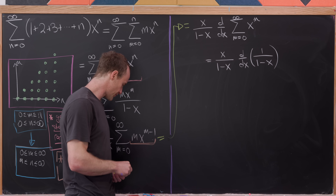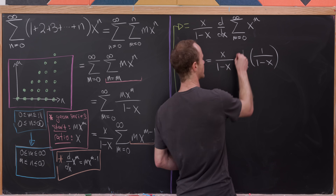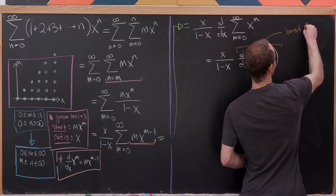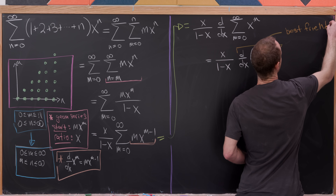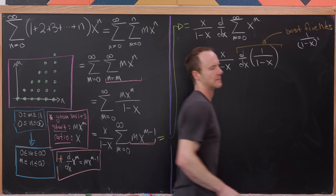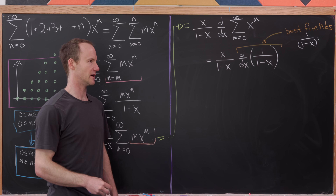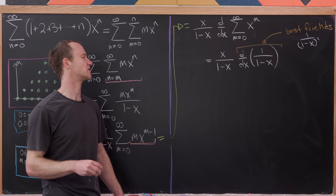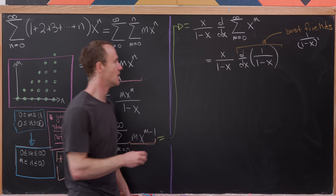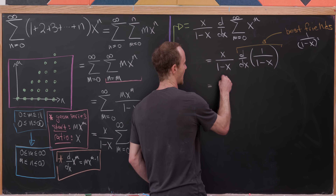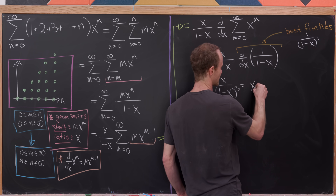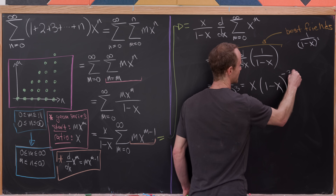The derivative of 1 over (1 minus x) with respect to x is best friends with 1 over (1 minus x) squared — the derivative of one is the other. That derivative is 1 over (1 minus x) squared, so multiplying through gives us x over (1 minus x) cubed, or x times (1 minus x) to the minus third.